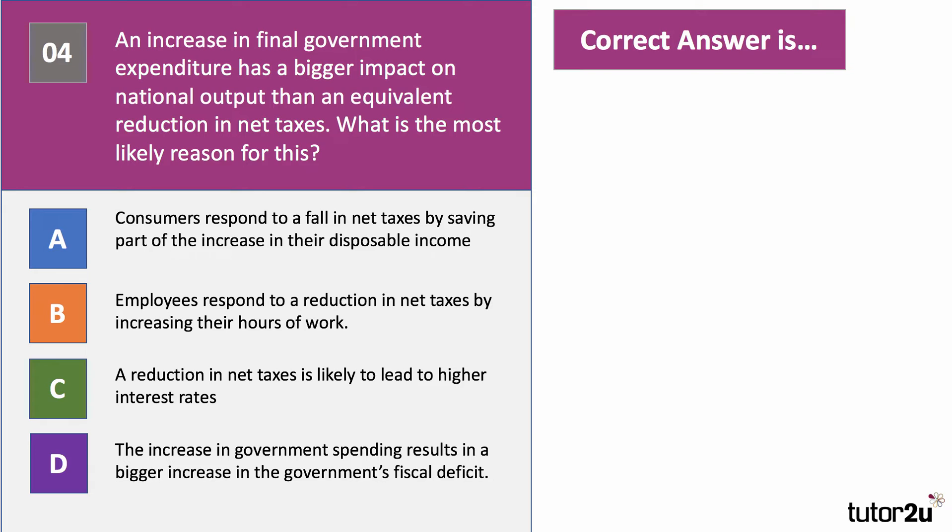Question four is asking why the multiplier effect of an increase in government spending — say five billion pounds — might be bigger than a five billion pound reduction in tax. The most likely reason is A: consumers respond to a fall in taxes by saving part of the increase in their disposable income, perhaps because they think the tax cuts can be reversed, or because they're on higher incomes. Typically when you give a tax cut to lower-income families they spend a high percentage, generating a bigger multiplier.